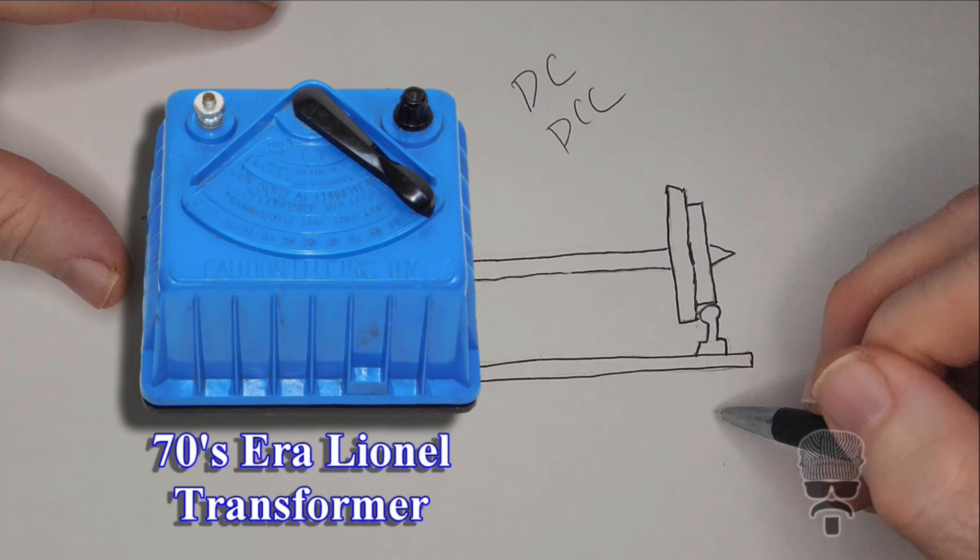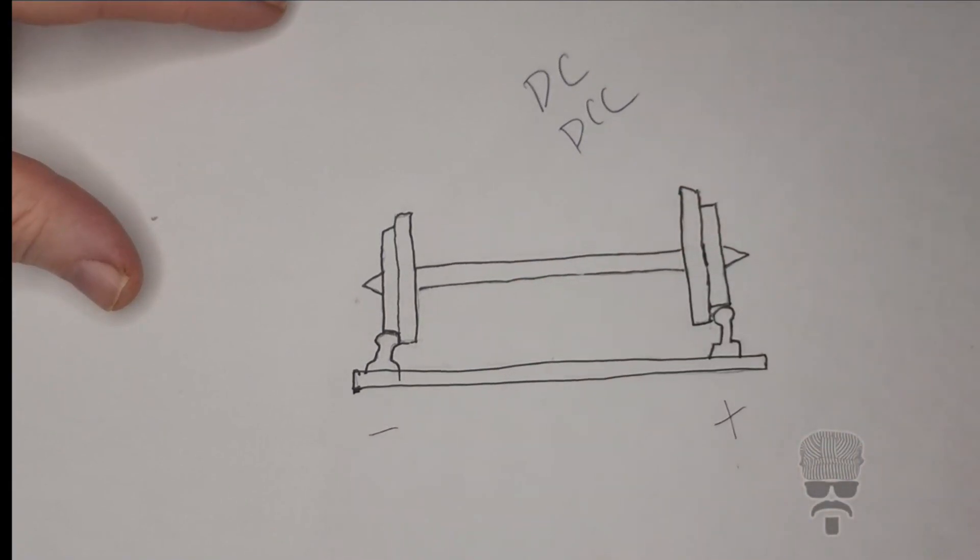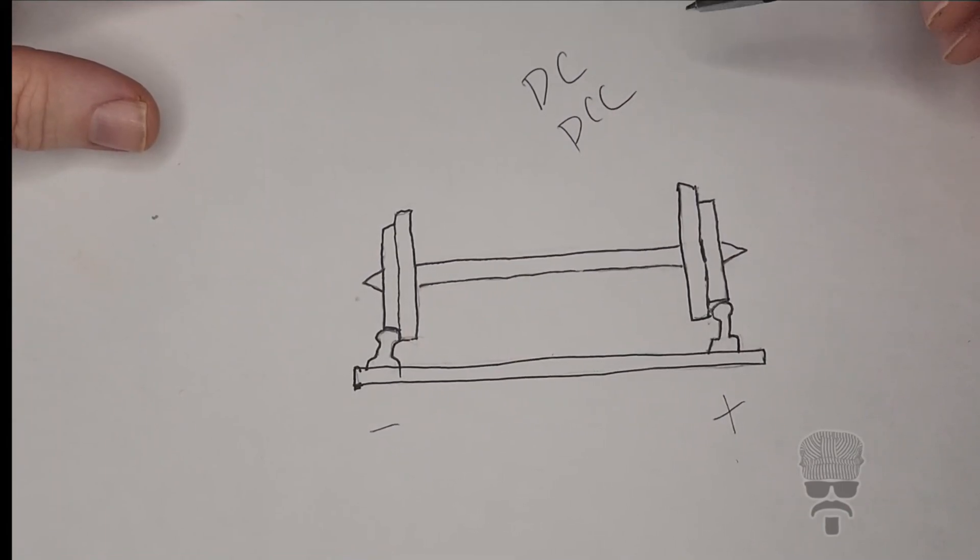You have a transformer that converts AC power from your normal household service to DC. Power is run from the transformer to the track via two wires, positive on one rail, negative on the other. Basically, you gradually increase the power to the track and the locomotive goes faster. Decrease power and the engine slows down. Reverse the polarity and the train runs in the other direction.